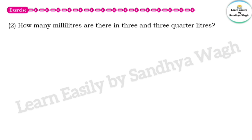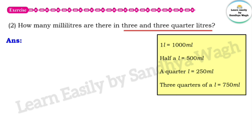Next question: how many millilitres are there in 3 and 3 quarter litres? To find out, let us use the reference chart: one litre is equal to 1000 millilitres, half a litre is 500 millilitres, a quarter litre is 250 millilitres, and 3 quarters of a litre is 750 millilitres.